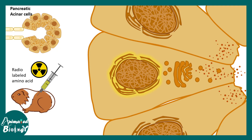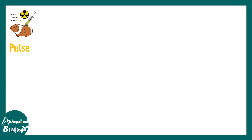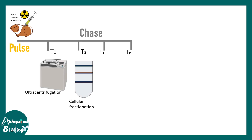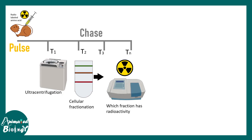The time at which Palade did these experiments was the era of radioactivity — everybody was using radioactivity to understand the mysteries of life. What they did was provide a pulse followed by a chase. At different time points T1, T2, T3, and so on, they would take out the pancreas, grind it up, and use ultracentrifugation for cell fractionation to produce different cellular fractions. The question they asked was: in which fraction can radioactivity be seen at each time point?